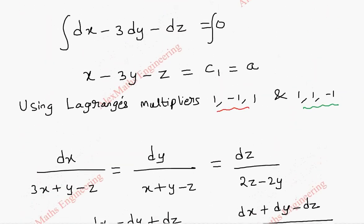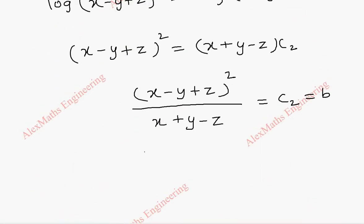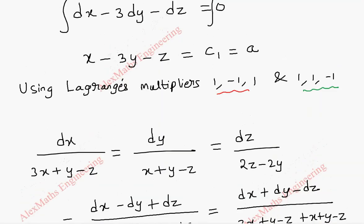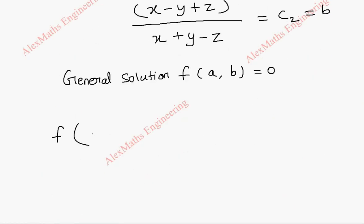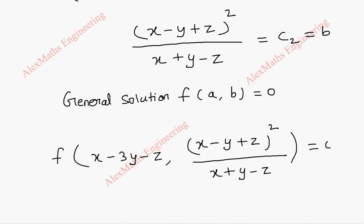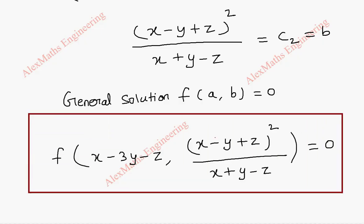We already have constant a. Combining these two, we write the general solution in the form f(a, b) equal to 0. So f of a, which is x minus 3y minus z, and b, which is (x minus y plus z) squared divided by (x plus y minus z), equal to 0. Thus, we got the general solution for the given partial differential equation using Lagrange's multiplier method.